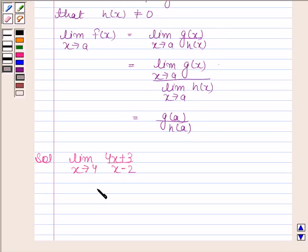So, this means limit of (4x + 3)/(x - 2) as x tends to 4 is (4×4 + 3)/(4 - 2). This is equal to 19/2.